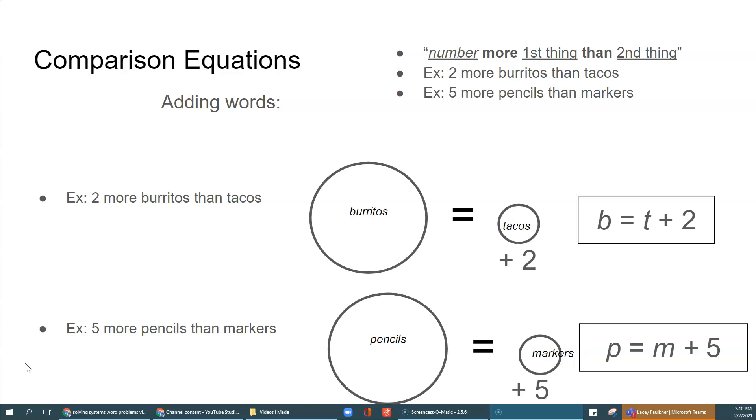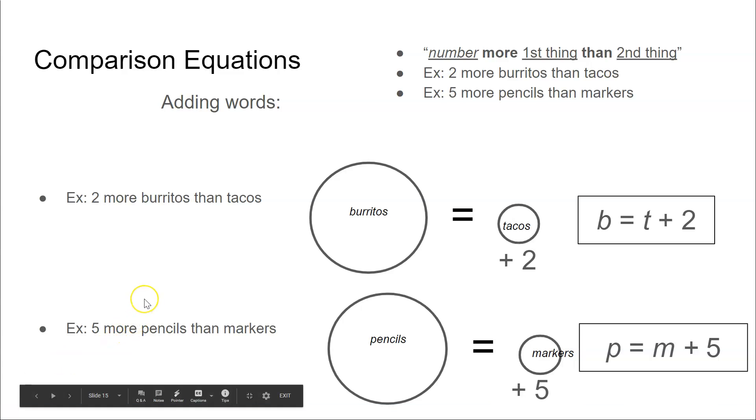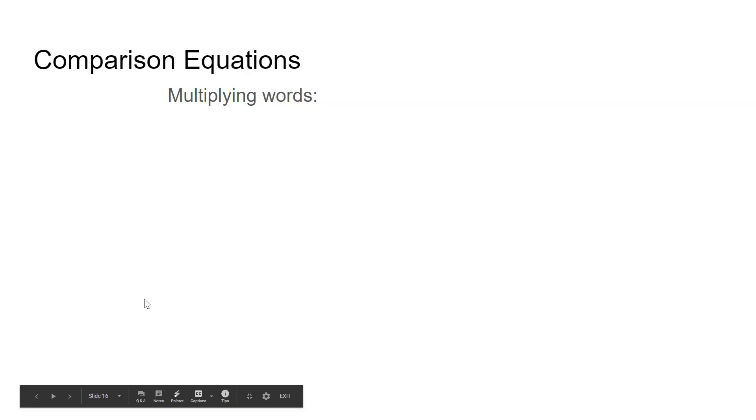Those are comparison equations with adding words. Let's look at comparison equations with multiplying words. This is where in the problem it uses a word like twice or thrice occasionally, or it'll say something like doubled or tripled, or it'll say two times, three times, etc. It's some sort of phrasing that indicates that we are multiplying one thing when we compare it to the other thing.